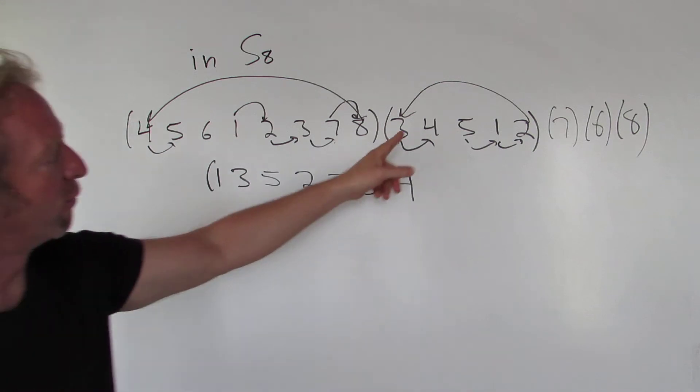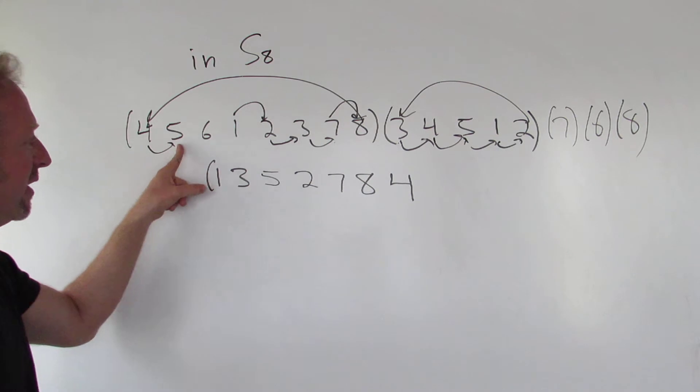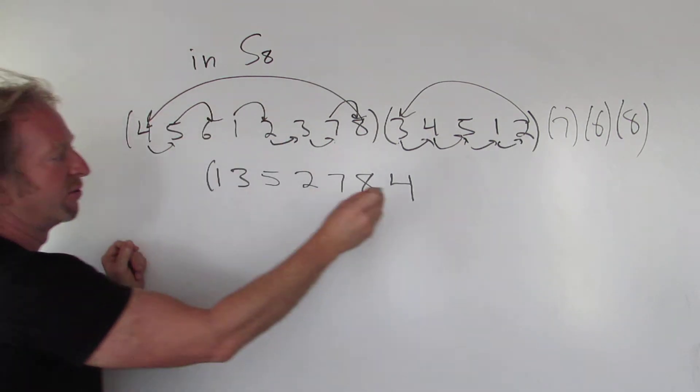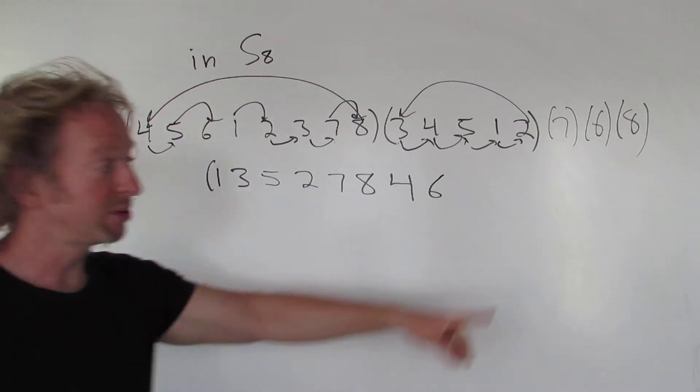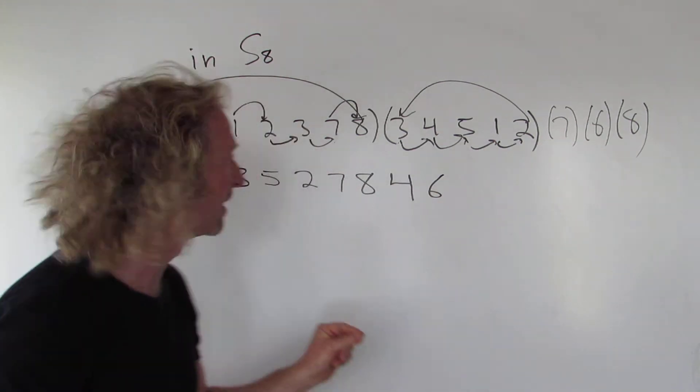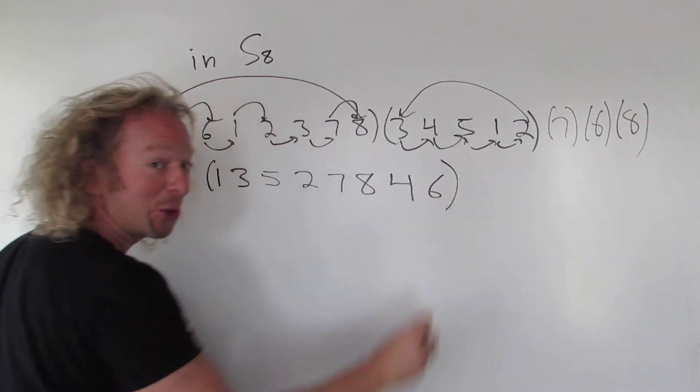Where does 4 go? 4 goes to 5. And then where does 5 go? 6 goes to 6. And then 6 here goes to 1. And so we close it.